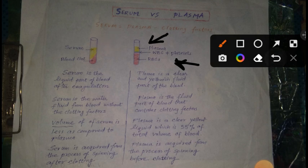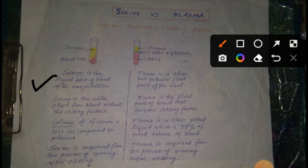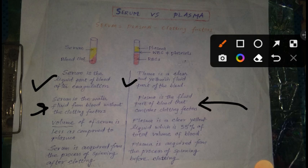Thik hai na. Aab hum isko thoda sa aur textual way me samajh lete hai. First point: serum is the liquid part of blood after coagulation, whereas plasma is a clear and yellowish fluid part of the blood. Second point: serum is the watery fluid from blood without clotting factors. Toh koi bhi clotting factor hame serum me dekhne ko nahi milega, jabki plasma me clotting factors aapko dekhne ko milenge.